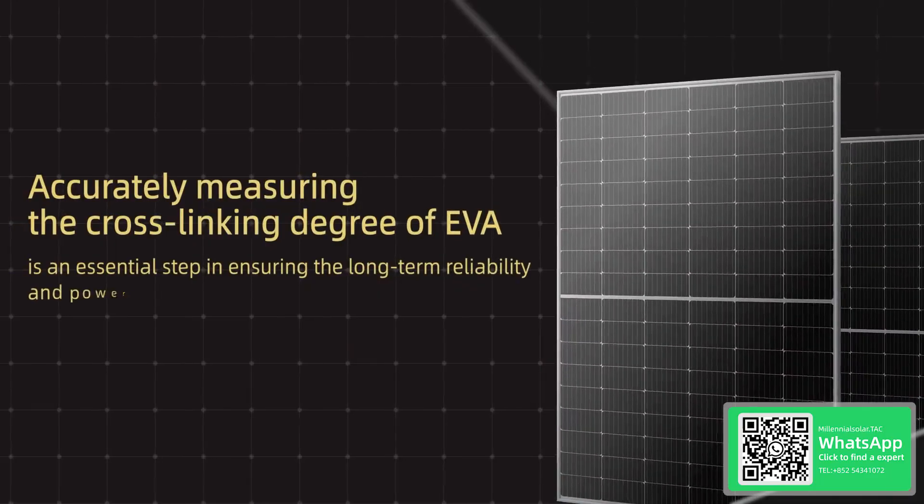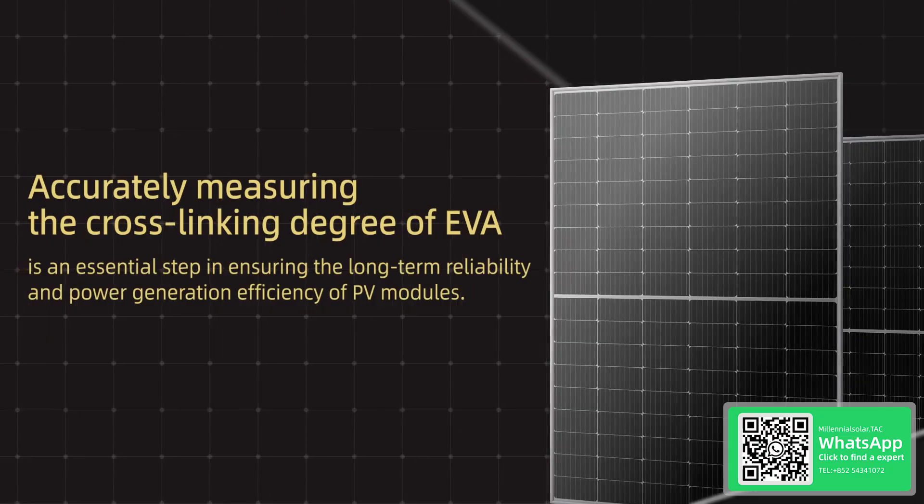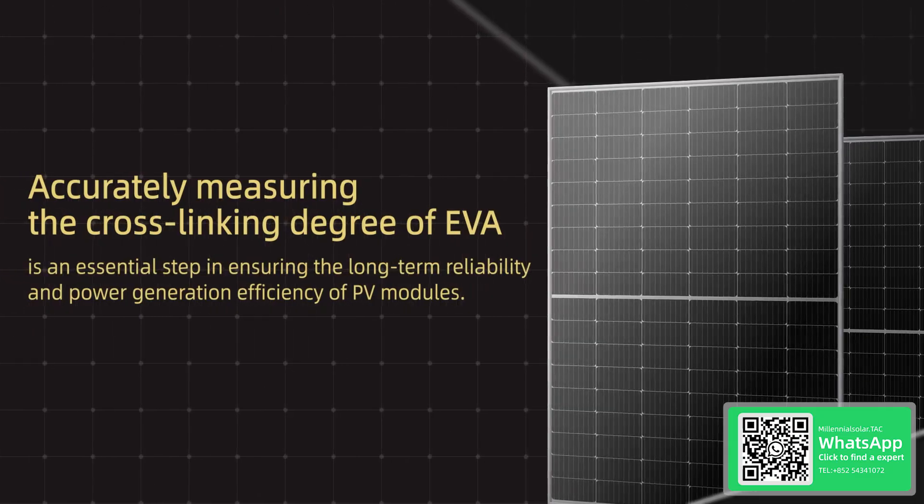Therefore, accurately measuring the cross-linking degree of EVA is an essential step in ensuring the long-term reliability and power generation efficiency of PV modules.